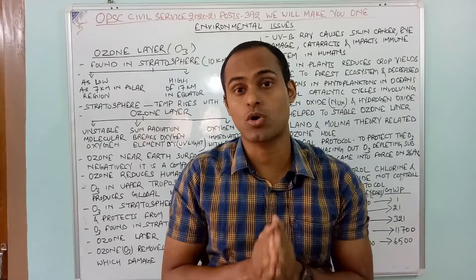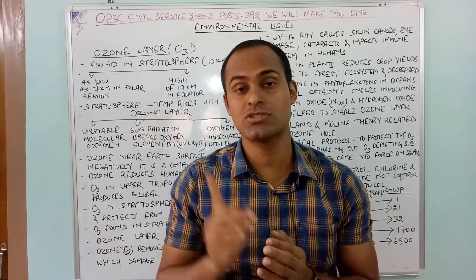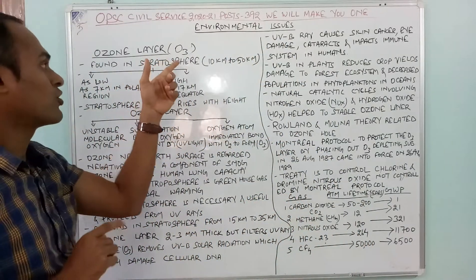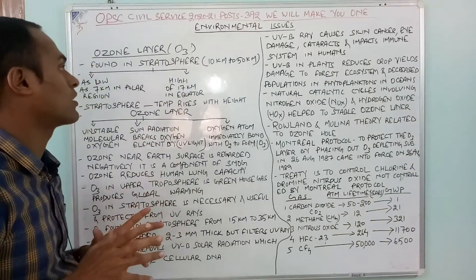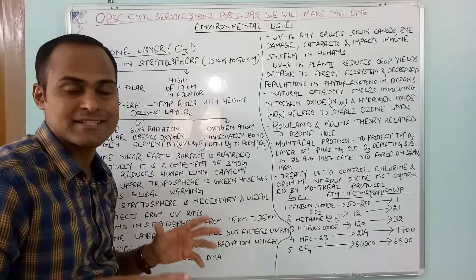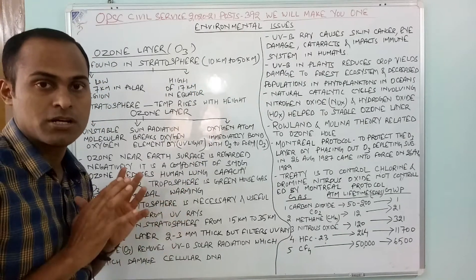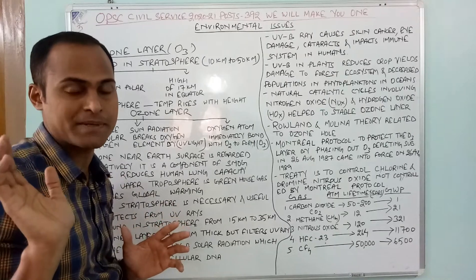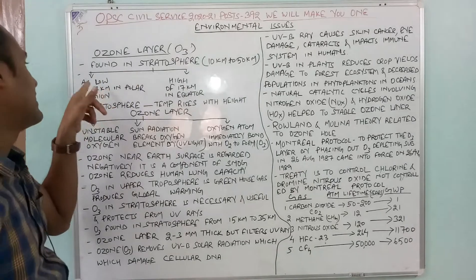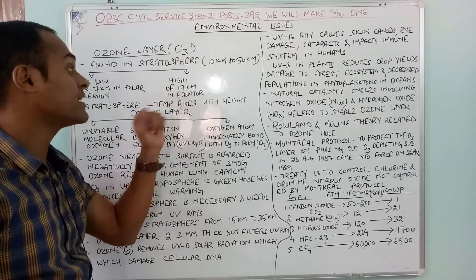Today we will discuss about environmental issues — that is ozone layer. Ozone layer is otherwise called as O3. It is found in the stratosphere, starting from 10 kilometer to 50 kilometer. That is the range in which the stratosphere exists in our atmosphere.